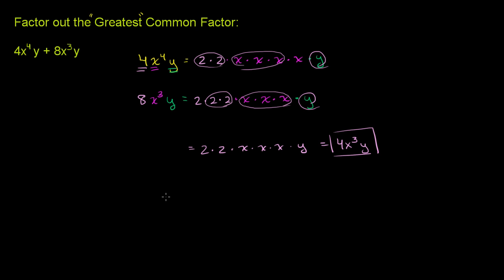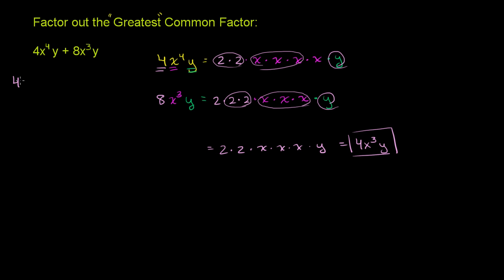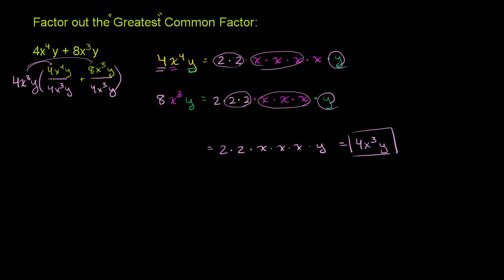So this is what we want to factor out. We can write 4x to the fourth y plus 8x to the third y as 4x to the third y times each of those terms divided by 4x to the third y. If we were to multiply this out, we would distribute 4x to the third y onto each term, and it would cancel with the denominator. So these are the exact same expression. Writing it this way, it becomes clear this is 4x to the third y times the simplified terms inside.